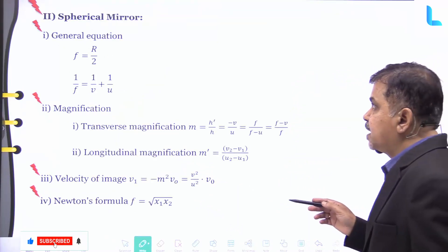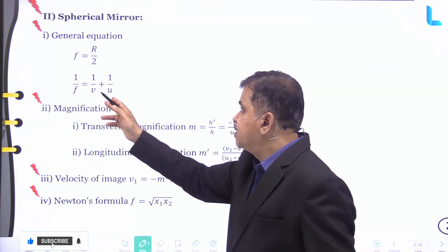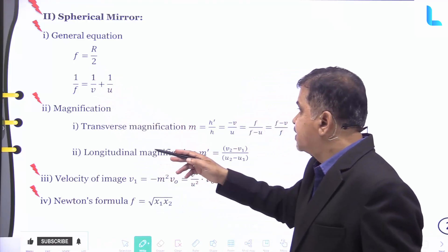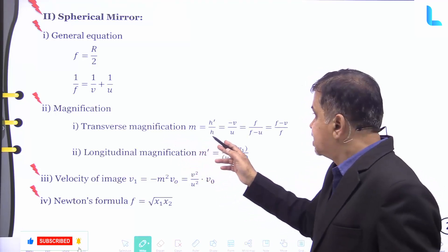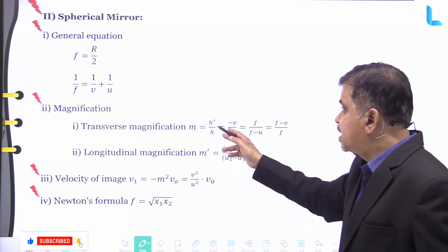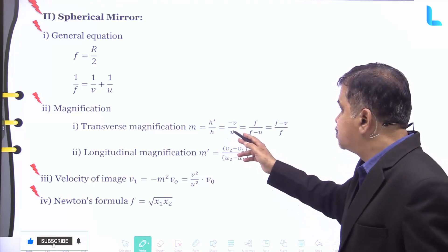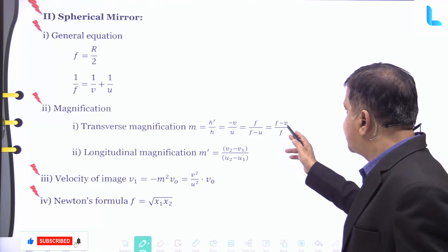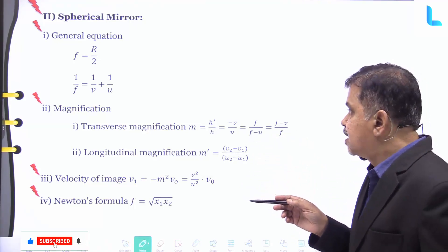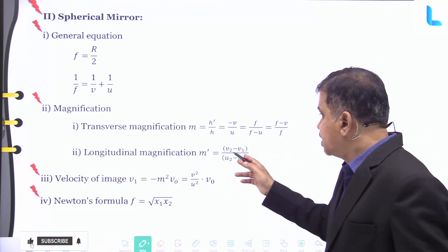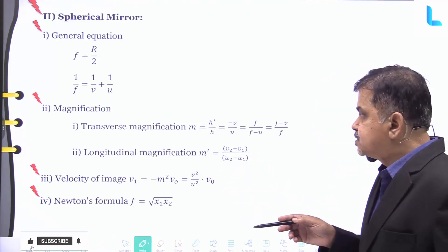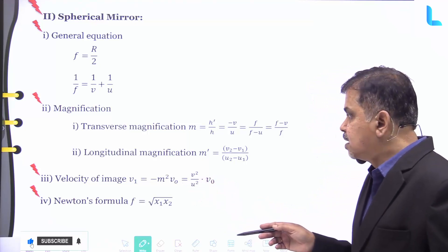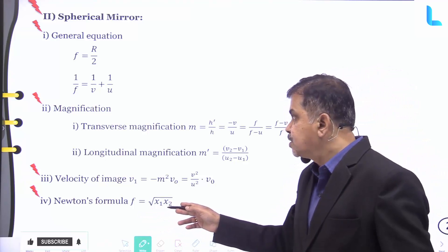For a general spherical mirror, the mirror equation is 1/f = 1/v + 1/u, where f = R/2. The transverse magnification M = h'/h = −v/u = f/(f−u) = (f−v)/f. The longitudinal magnification M' = (v₂−v₁)/(u₂−u₁). The velocity of the image V₁ = −M²·V₀ = (v²/u²)·V₀. Newton's formula gives f = √(x₁·x₂).